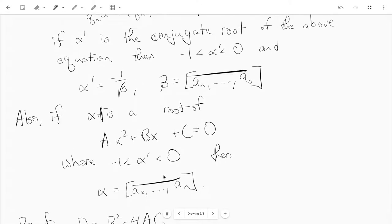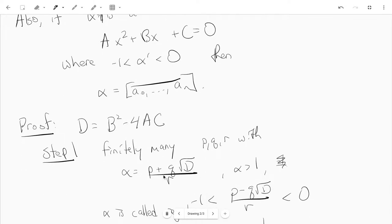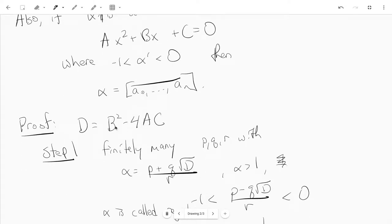We're not going to prove this, but I'll just lay out some of the steps. First, you let d be the discriminant of this equation, so b squared minus 4ac